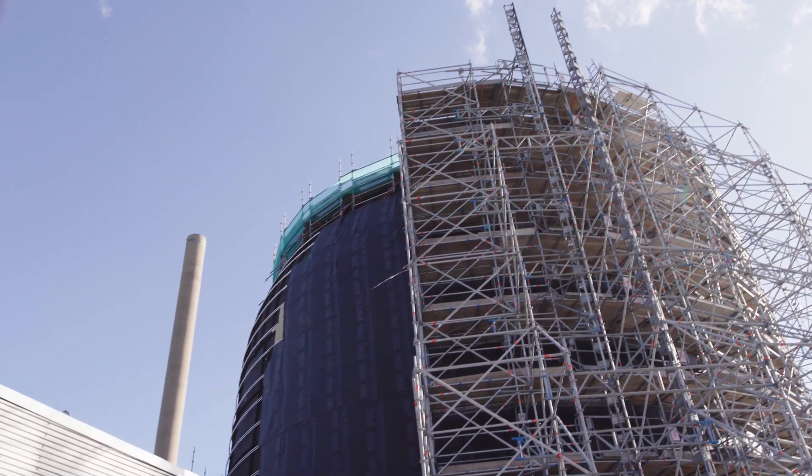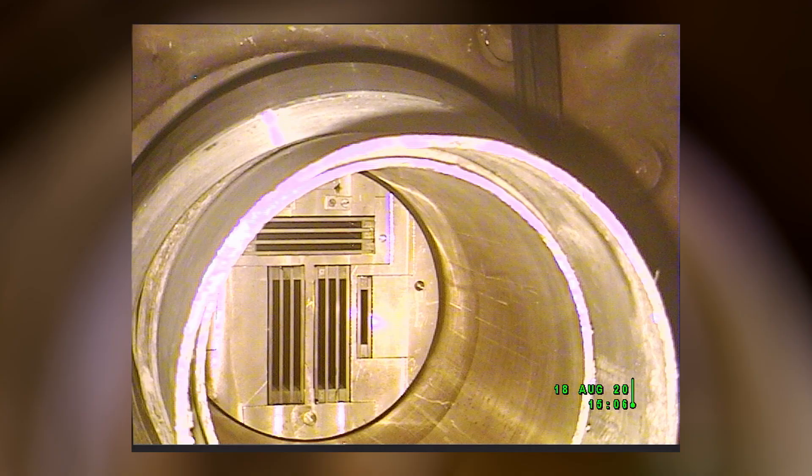Our goal is to bring the radiation from the core to the experiments and we have what we call beam tubes for this. Within Oyster we want to modify one of the beam tubes to include a new experiment which is the cold neutron source.